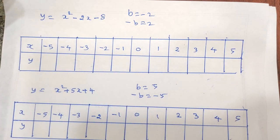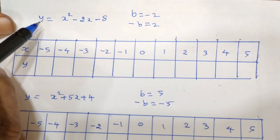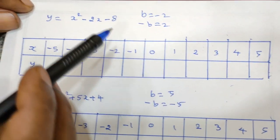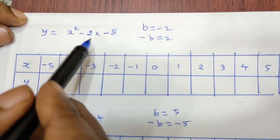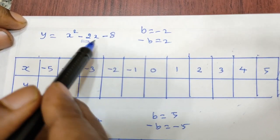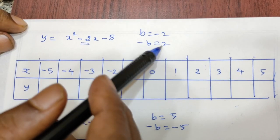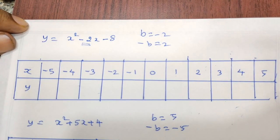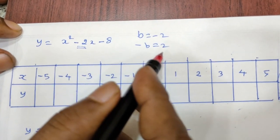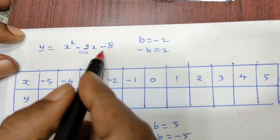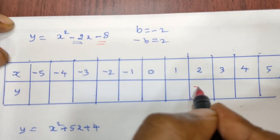This is a type. 1 equals x squared minus 2x minus 8. This is the main factor. If you have b equals minus 2, what is minus b? 2. 2 is the constant term.